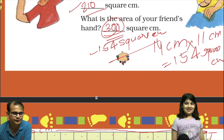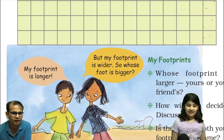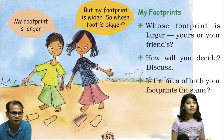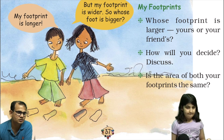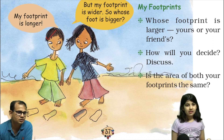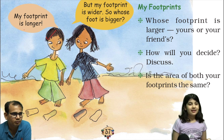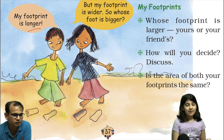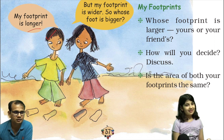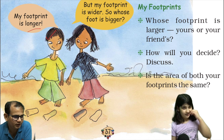Should we go to the next page? Yes. Something is here, also here. So what is this girl telling? This is a boy. What is this girl telling? My foot print is lower. She is telling her foot print is lower. This is a boy. So you are saying this is a boy. So as this boy is telling, my foot print is longer.